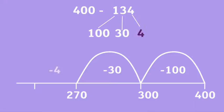And then they can take away the 4. That takes them to 266.